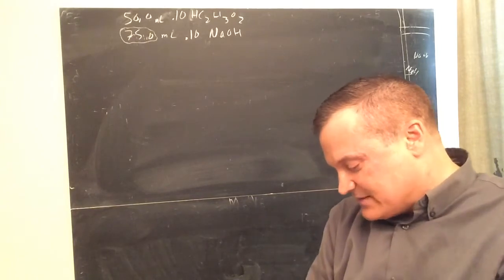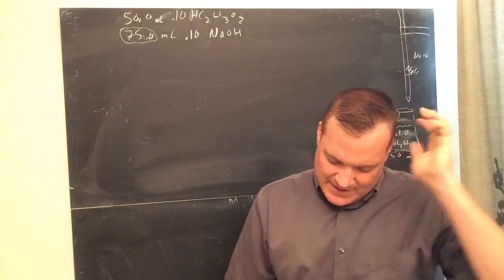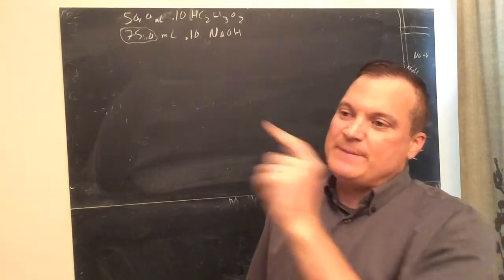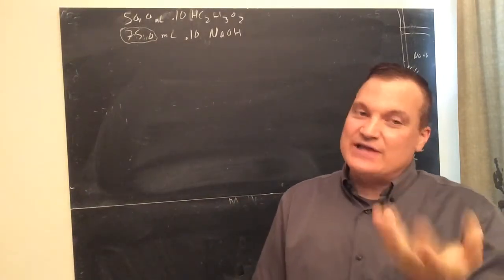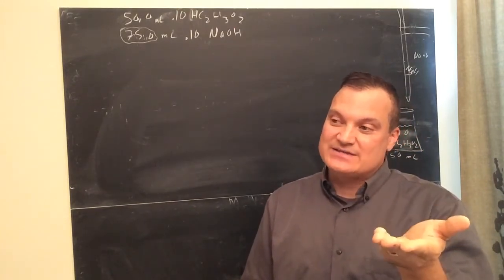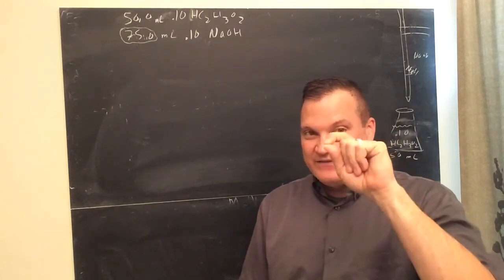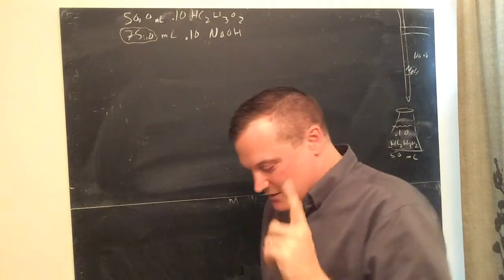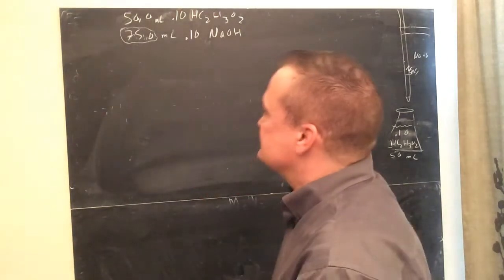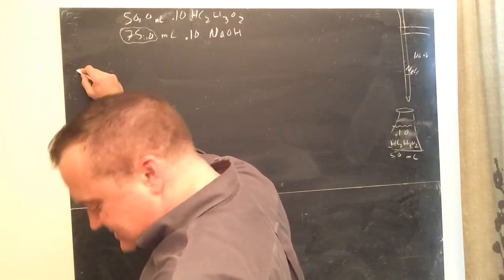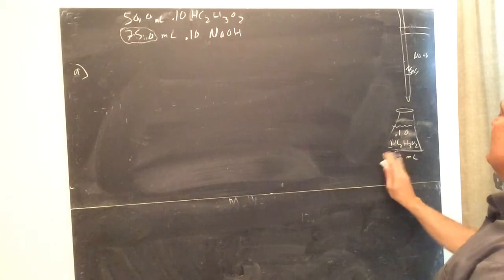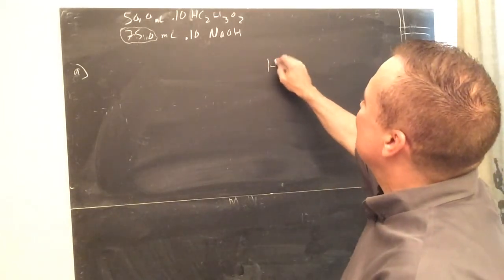Part A: what is the pH before any base has been added? At the very beginning, all you have is 0.10 molar acetic acid — you've got 50 milliliters of it. We've already been doing this kind of problem. I'll set up an ICE box. You're starting off with 0.10 molar acetic acid, 0 for H3O+, 0 for the conjugate base. Change row: minus X, plus X, plus X. Equilibrium: 0.10 minus X, X, X.